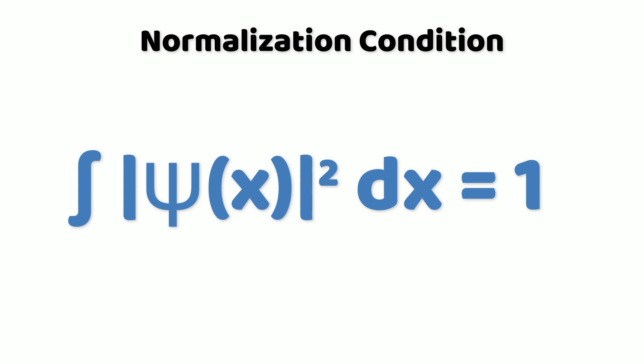over all possible states, which must equal one, where ψ is the wave function and |ψ|² represents the probability density. The integral is taken over all possible values of the variable x, which could represent position, momentum, etc.